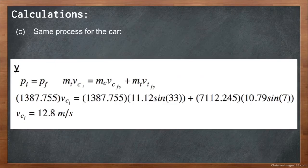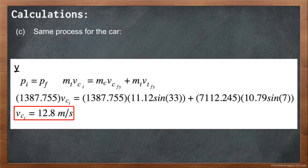When you repeat the process for the car, solving for velocity initial, you get 12.8 meters per second.